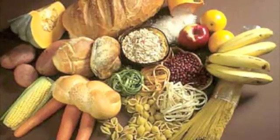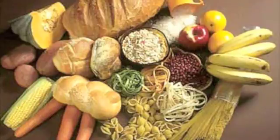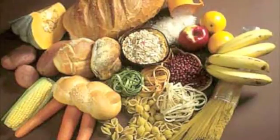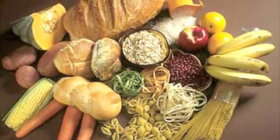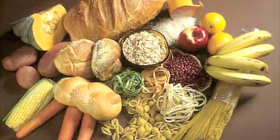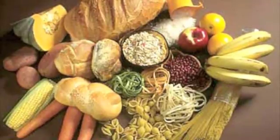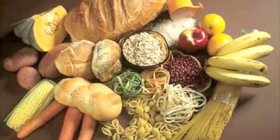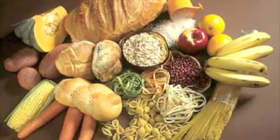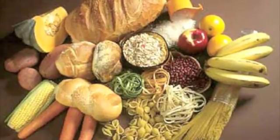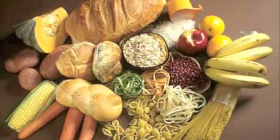For example, starches serve as storage forms for carbohydrates. Humans need starches like rice and wheat to survive. Plants also use starch as energy source while animals use glycogen. Moreover, cellulose is another polysaccharide that adds strength and stiffness to a plant cell wall.